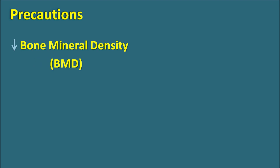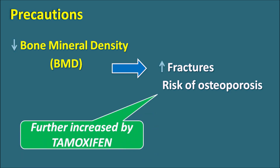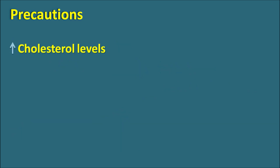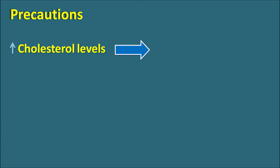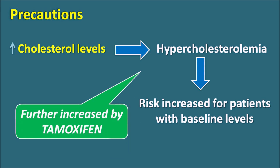What are the precautions? One important precaution is the decrease in bone mineral density. Aromatase inhibitors like Letrozole reduce bone mineral density, which may result in increased fractures as well as increased risk of osteoporosis. Osteoporosis is more observed with anti-estrogens, and the risk can be further increased when Tamoxifen is combined with Letrozole. Another important precaution is increased cholesterol levels. Letrozole can produce hypercholesterolemia, which may sometimes require therapy with statins. This can increase the risk of atherosclerosis and cardiovascular disorders, and Tamoxifen can further increase the hypercholesterolemia when given along with Letrozole.